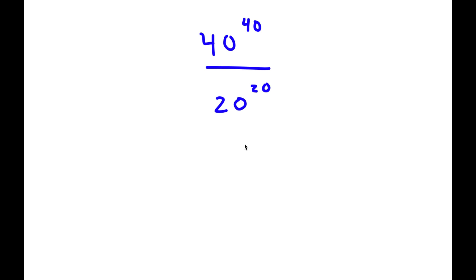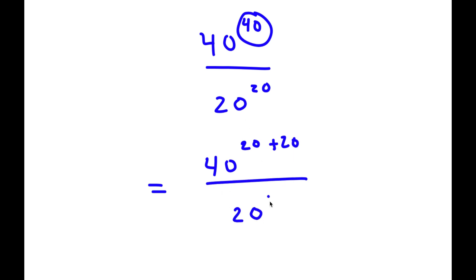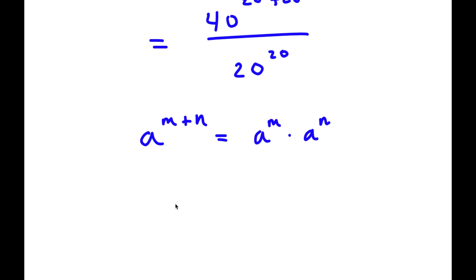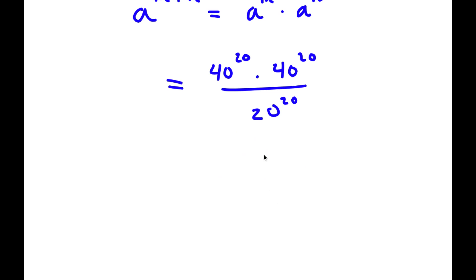In this problem, I have 40 to the power of 40 over 20 to the power of 20. First, I'm going to write the exponent 40 as 20 plus 20. So now I have 40 to the power of 20 plus 20 over 20 to the power of 20. Since a to the power of m plus n equals a to the power of m times a to the power of n, I can write 40 to the power of 20 plus 20 as 40 to the power of 20 times 40 to the power of 20, all over 20 to the power of 20.